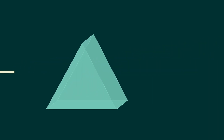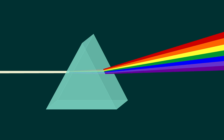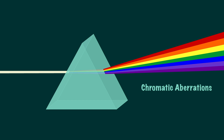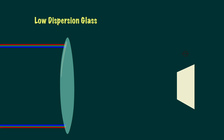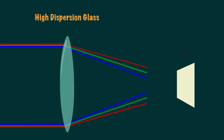When glass fails to focus these waves of colour to the same point, it causes chromatic aberrations. Glass that's used for lenses is low-dispersion glass, since it manages not to split the waves of colour. If you were to use high-dispersion glass in your lens, the image might look like this, with the colours fringing and splitting away from each other.